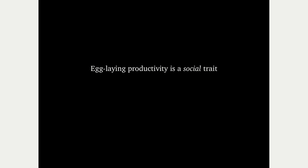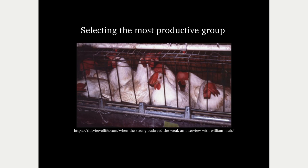The problem Muir discovered is that when you select for productivity, you're actually selecting for social dominance. These most productive hens were really just the biggest bullies — they suppressed the productivity of other chickens in their group and ate up all the food. When you breed these chickens, you're breeding bully, asocial chickens. When finally put in a group, they try to kill each other and produce almost no eggs. This shows that although you can measure individual egg-laying productivity, it's not an individual trait — it's a social trait.